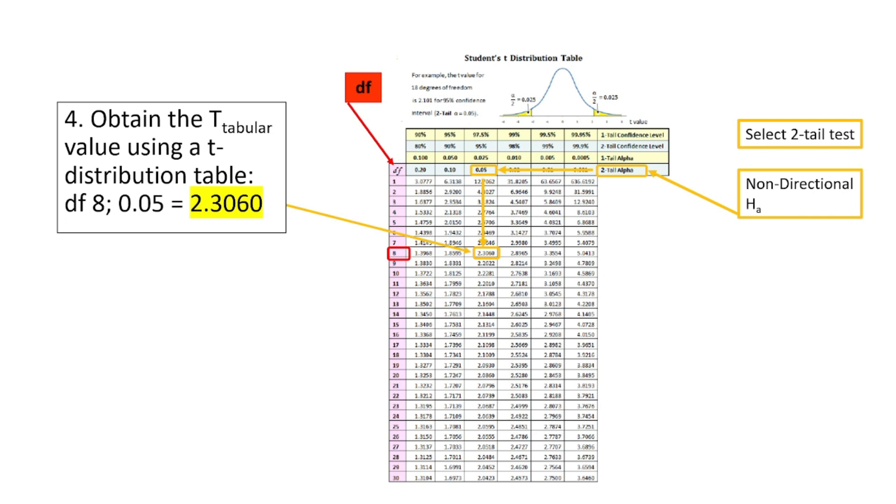Step 4. Obtain the critical value of t from the student's t-distribution table. In this case, we use a two-tail test, hence our t-critical value equals 2.3060.